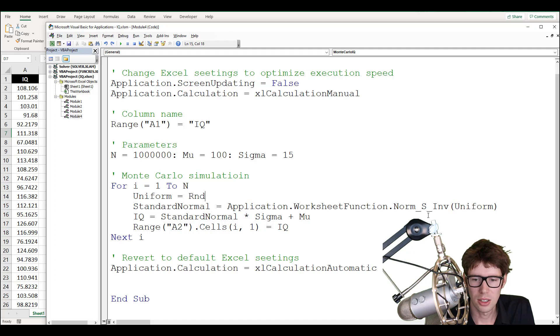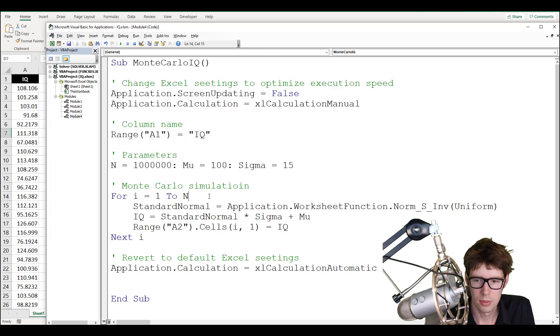So if I wanted to save another line of code here, I could just delete this part. And instead, just write RND here, that would work too.